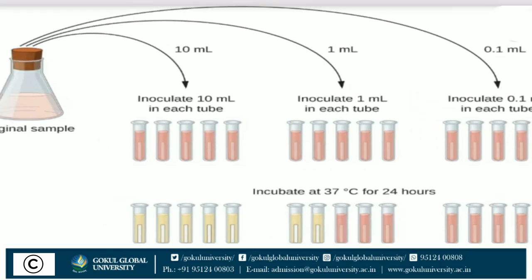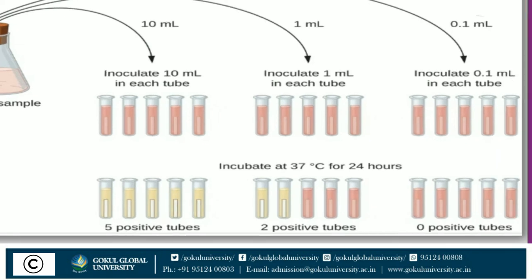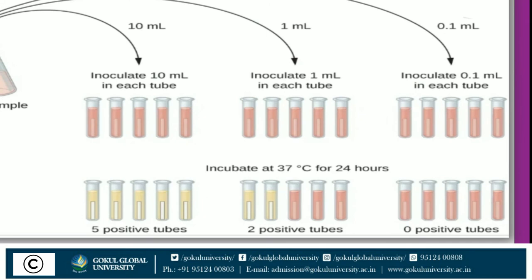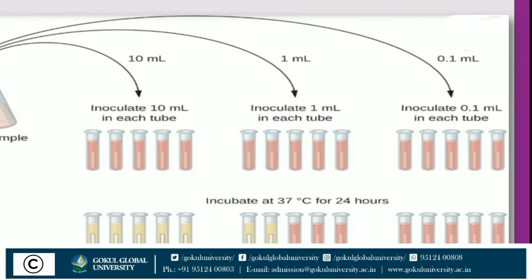Take the original milk sample. Take the first group of MLBB tubes and add 10 ml of sample to each tube, turn by turn. Then take the third group of MLBB tubes and add 0.1 ml of milk sample into each tube.